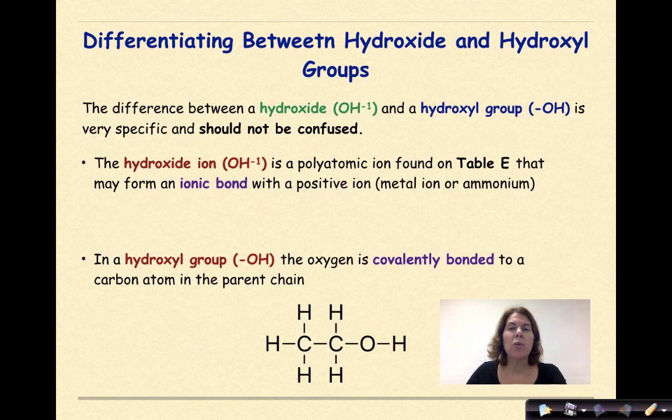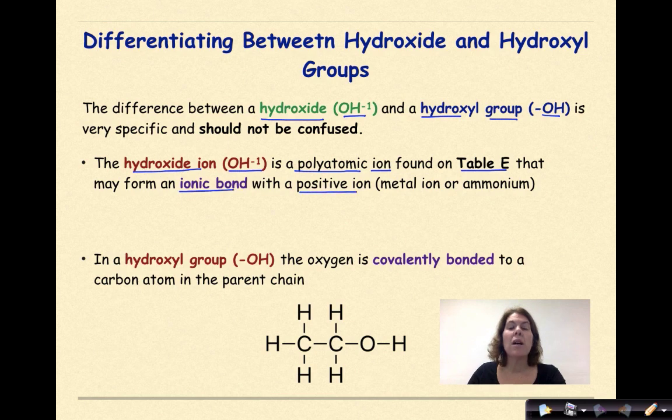Differentiating between hydroxide and hydroxyl groups. The difference between a hydroxide (OH⁻¹) and the hydroxyl group (-OH) is very specific and should not be confused. The hydroxide ion (OH⁻¹) is a polyatomic ion found on table E of your reference tables that may form an ionic bond with a positive ion, such as a metal ion or ammonium.